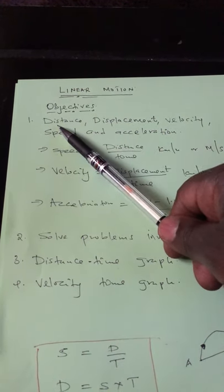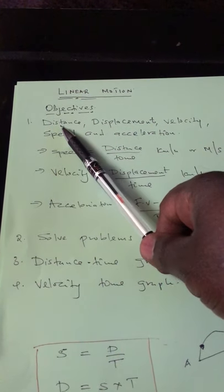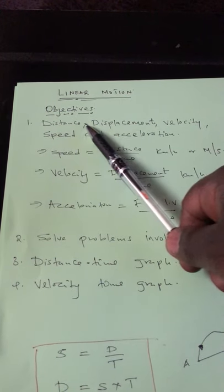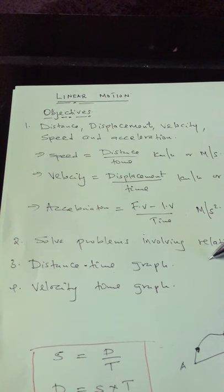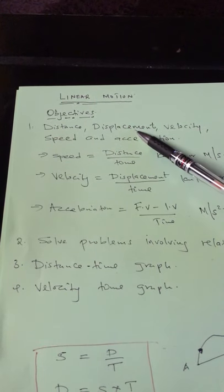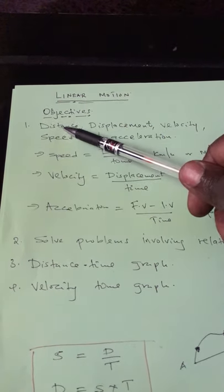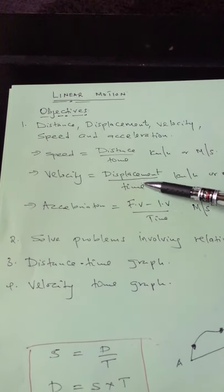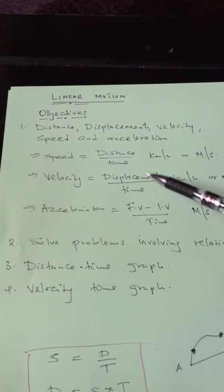It's good that you understand what these terms mean. First, distance and displacement — almost the same thing. But distance is a scalar quantity, while displacement is a vector quantity. When you talk of distance, it's a quantity which has magnitude but no direction.